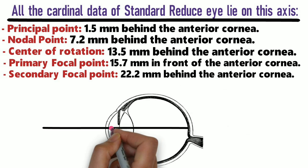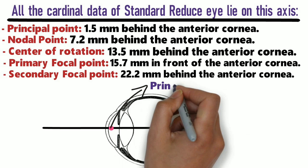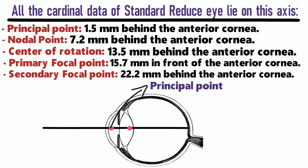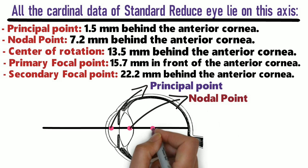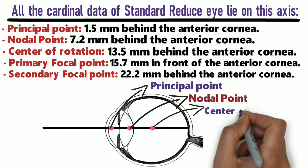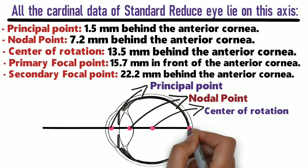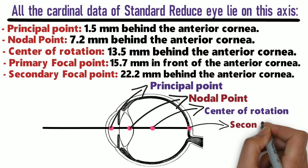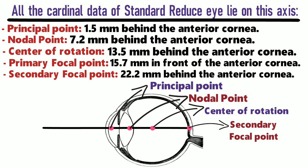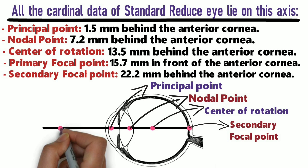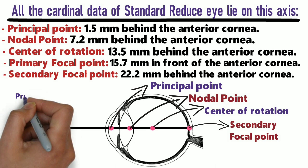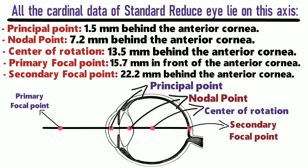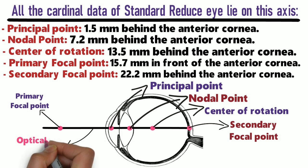In this diagram, this point represents the principal point, this dot represents the nodal point, and the center dot represents the center of rotation. This dot represents the secondary focal point, and the dot that is in front of the eye represents the primary focal point. The final line which joins all the dots is known as the optical axis of the eye.